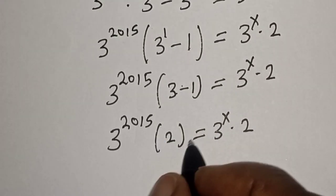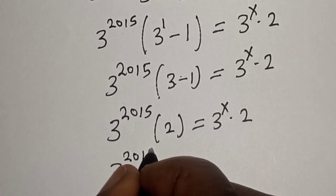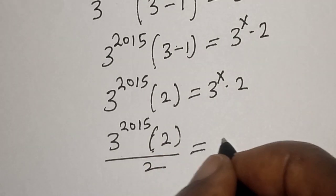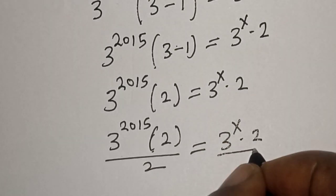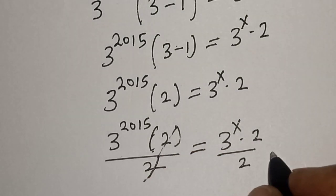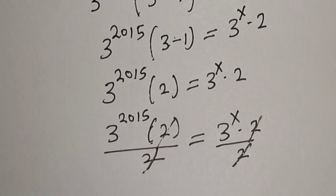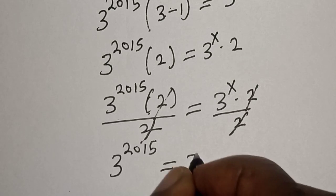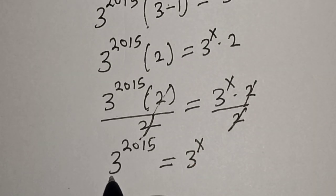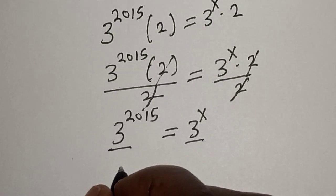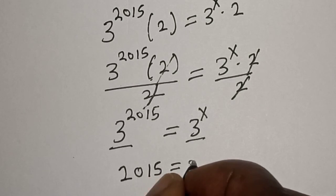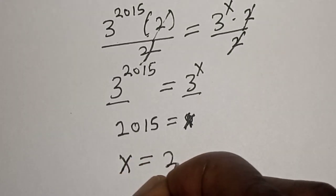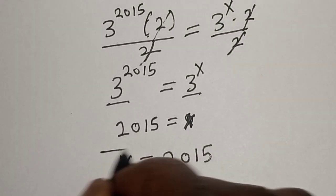Now let's divide both sides by 2. We have 3 raised to power 2015 bracket 2, divided by 2, equals 3 raised to power s multiplied by 2, divided by 2. The 2s cancel on both sides, so we have 3 raised to power 2015 equals 3 raised to power s. Since they have the same base 3, therefore 2015 equals s, and our final answer is s equals 2015.